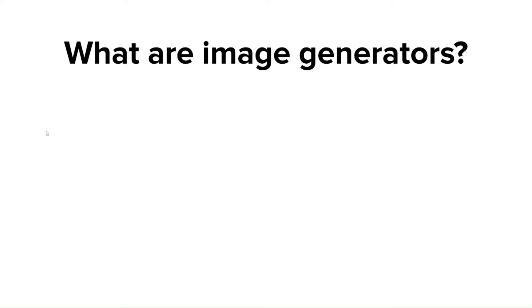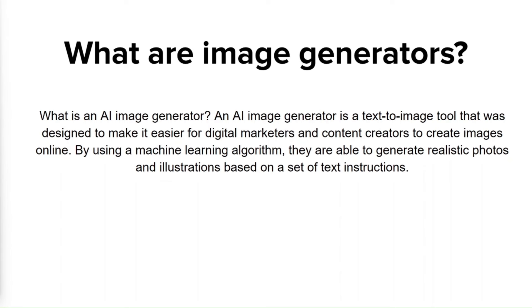An AI image generator is a text-to-image tool designed to make it easier for digital marketers and content creators to create images online. Using machine learning algorithms, they can generate realistic photos and illustrations based on a set of text instructions. An AI text-to-image generator makes use of artificial neural networks that receive input in the form of words and process them to generate an image. The entire process takes a few seconds, so you can see results almost immediately. Before they're reliably deployed, neural networks require a lot of training — almost like making connections between words and objects for the first time, but at a much faster speed with a lot more data.